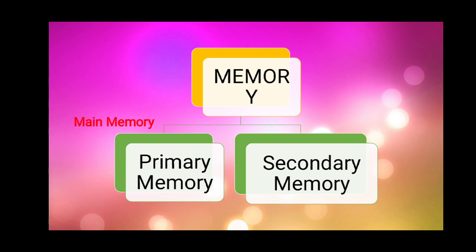Now what is secondary memory? Secondary memory is the external memory. Yeh permanent type of memory hoti hai. Ismein agar aapne data ek baar save kar diya, to woh future ke liye usmein save rahega. Kaafi saal baad bhi agar aap use lenge na, to aap ko mil jayega woh wahin pe. Isko hum external memory bhi bolte hai kyunki alag se humare computer mein attach ki jaati hai.